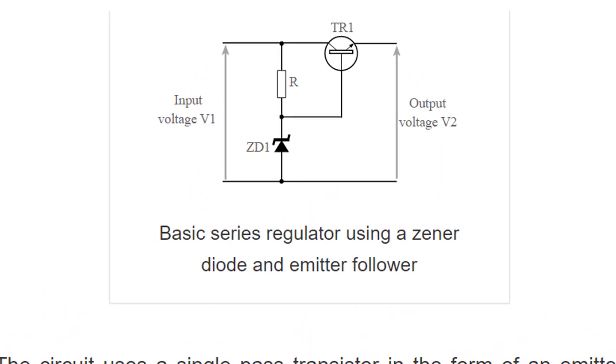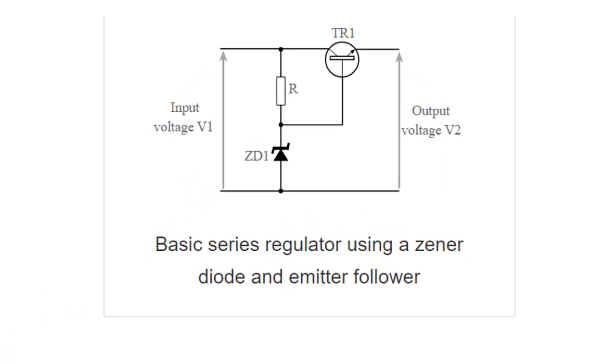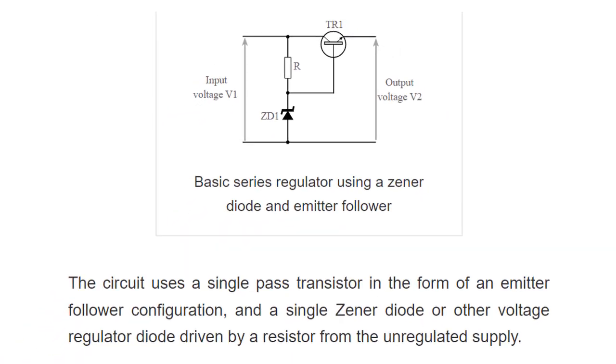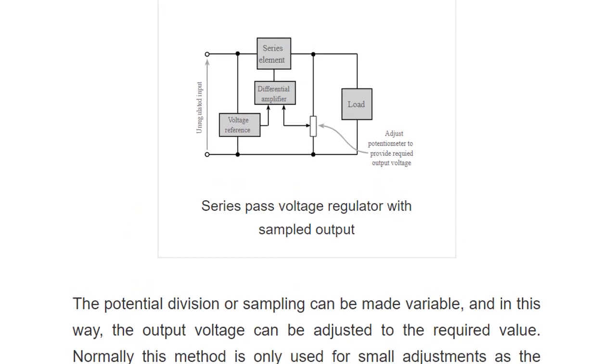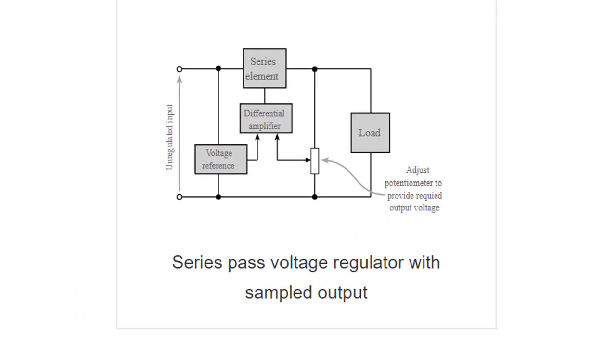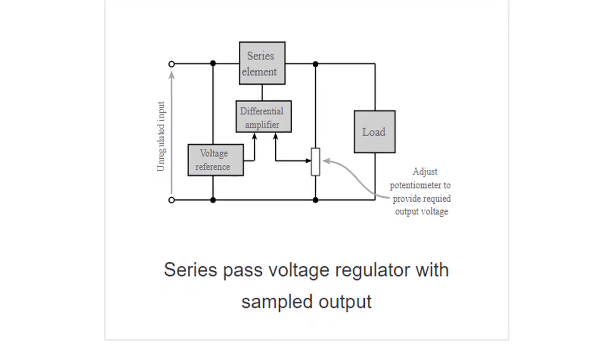The amount of current drawn is effectively used by the load. This is the main advantage of the series voltage regulator. Even when the load does not require any current, the series regulator does not draw full current. Therefore, a series regulator is considerably more efficient than a shunt voltage regulator.